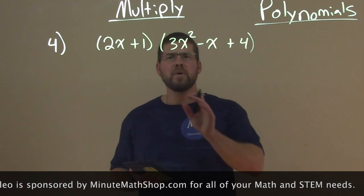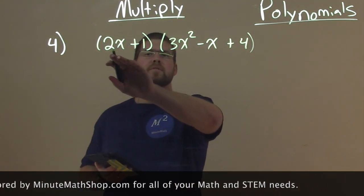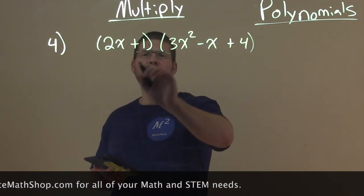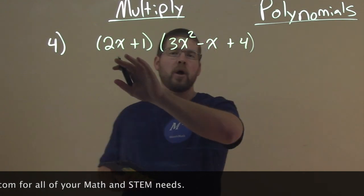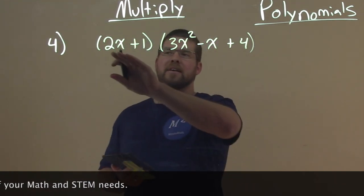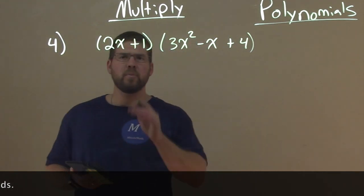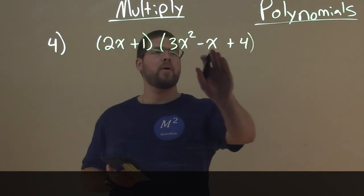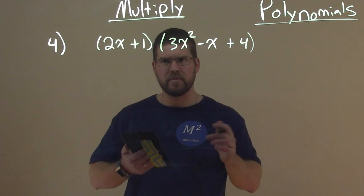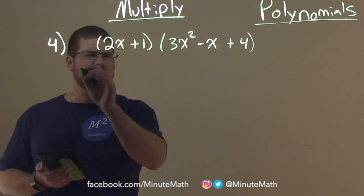So what we want to do is distribute this 2x plus 1, and I usually distribute from the smaller of the two, as in there's two terms here and there's three terms here. So we want to multiply this 2x by all parts of the second parenthesis. Let's write it out, let's take our time.